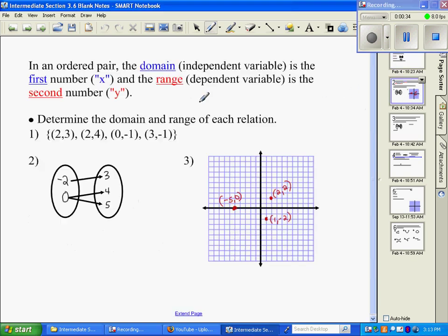In an ordered pair, the domain, the independent variable, is the first number, usually the X values, and the range, which is the dependent variable, is the second number or the Y values most often. So there's different ways that those are expressed.